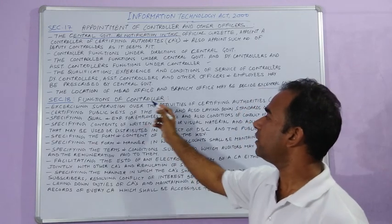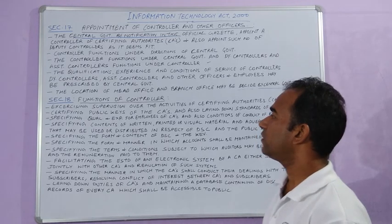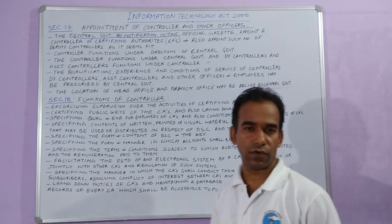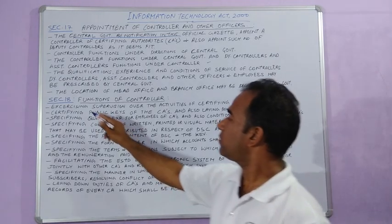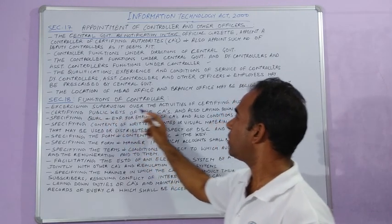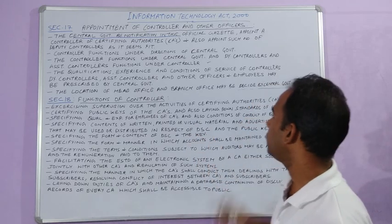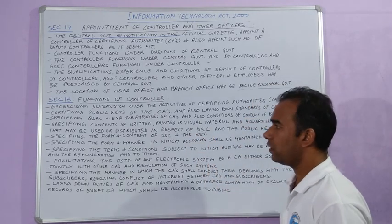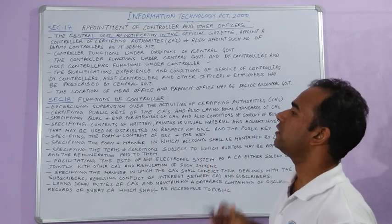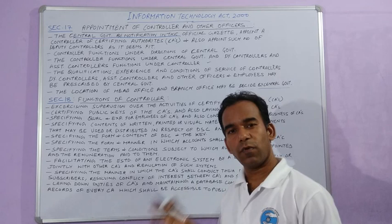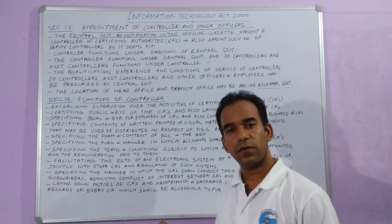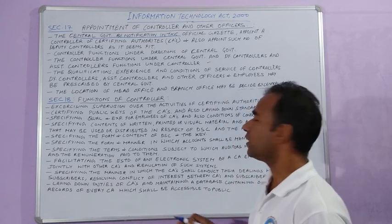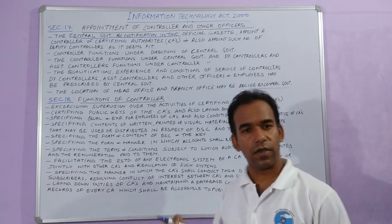Next is Section 18, which deals with the functions of the controller. The controller can exercise supervision over the activities of certifying authorities.